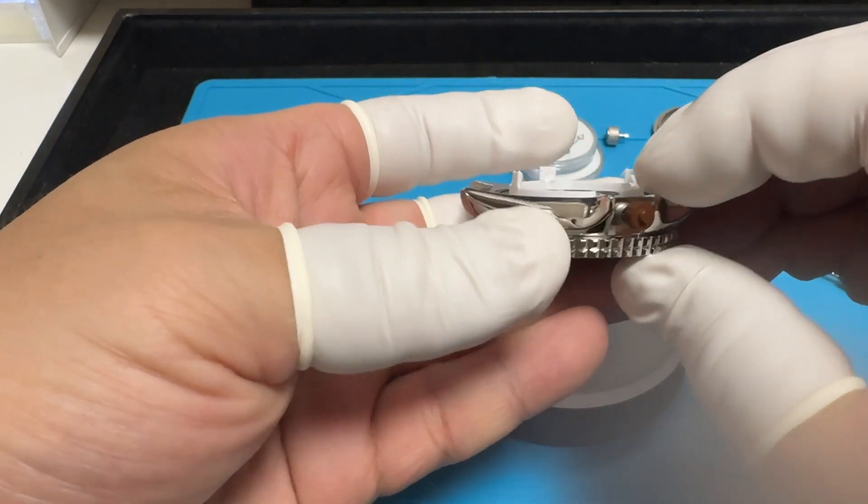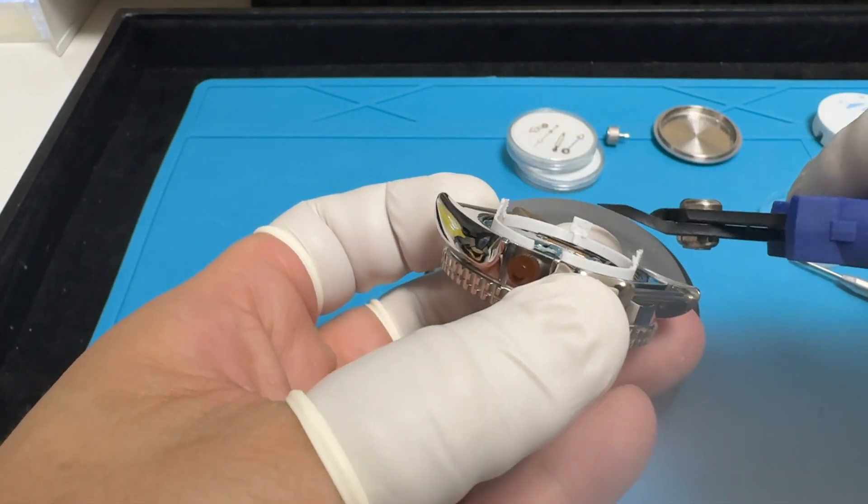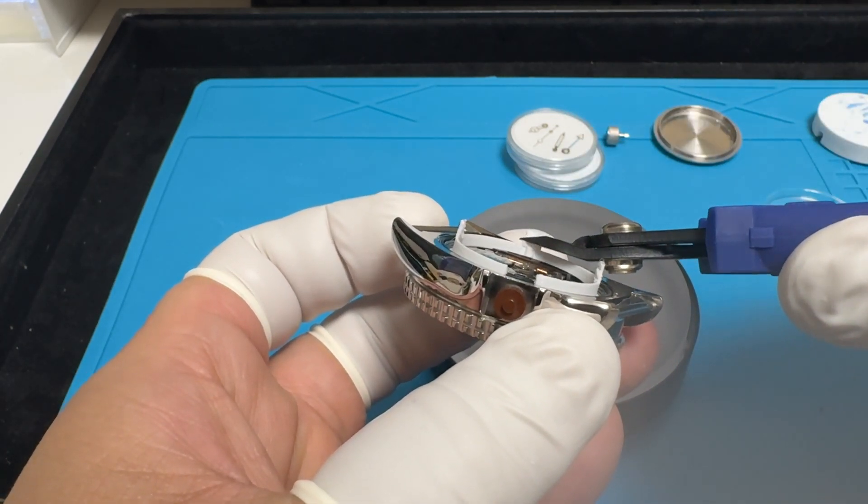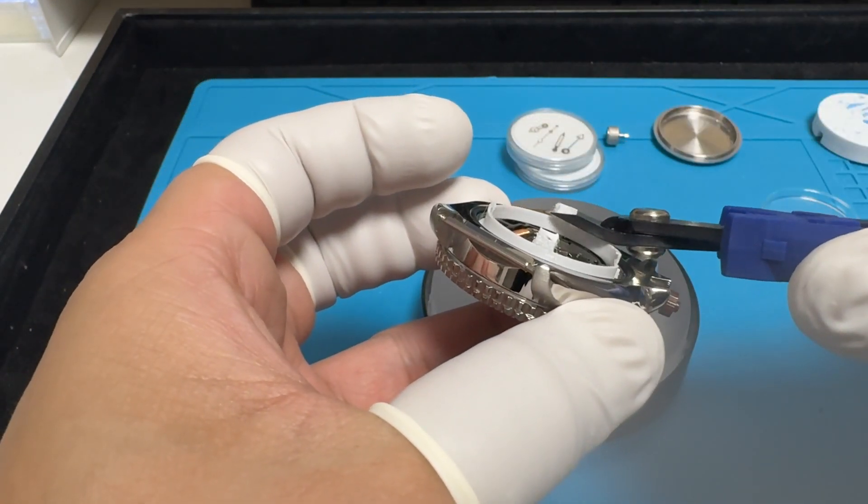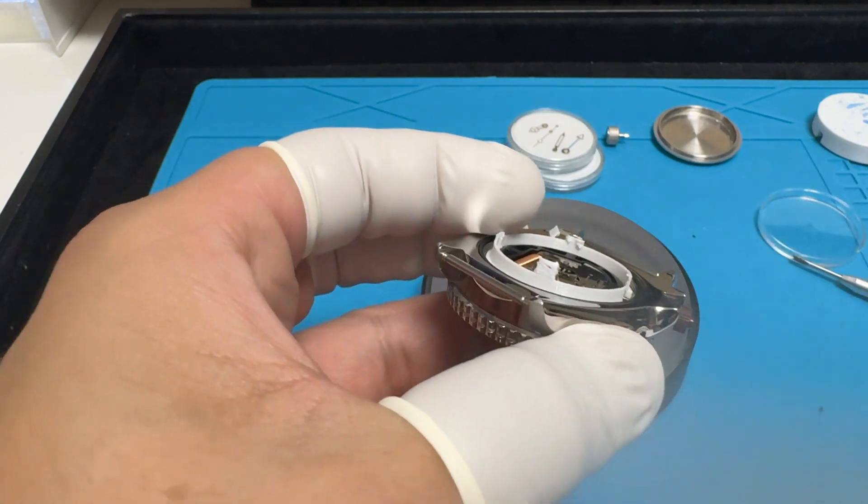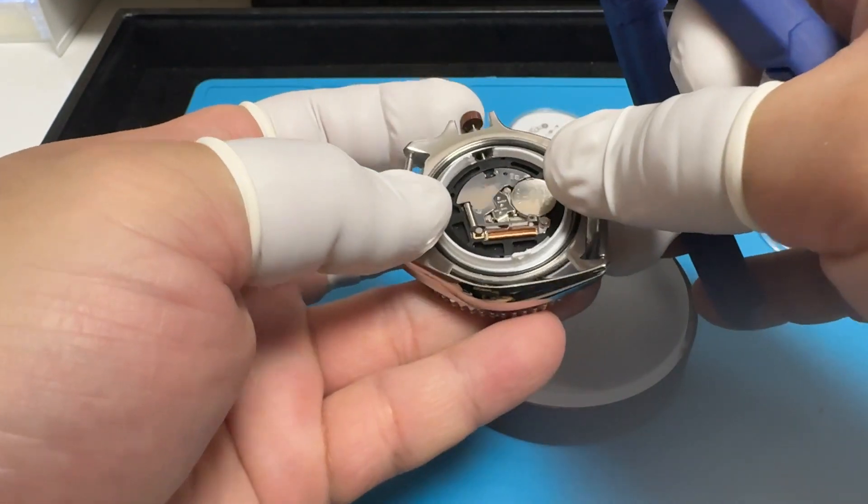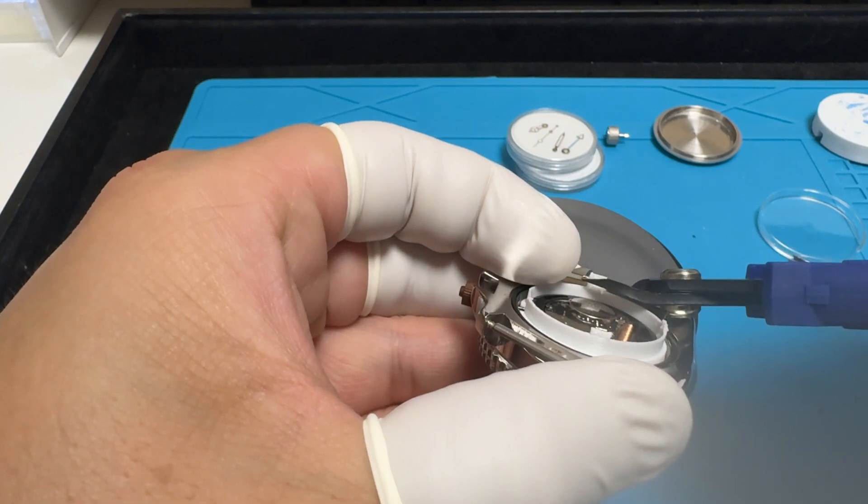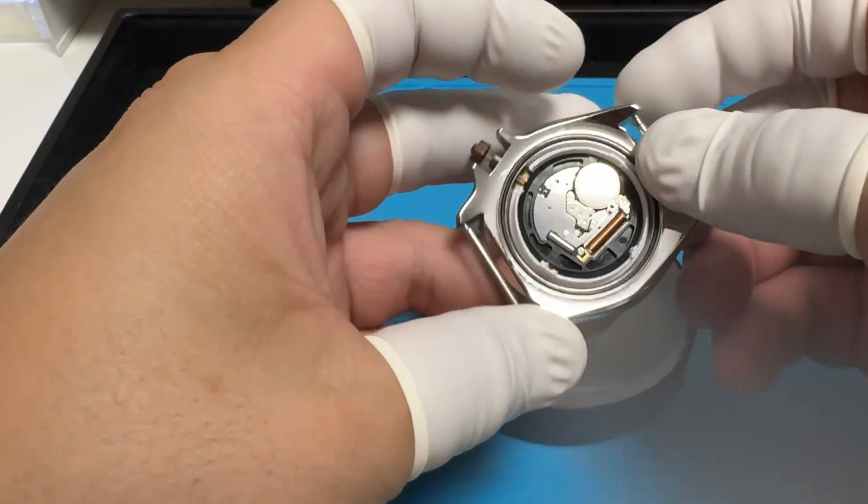Now for the movement holder, you can see that they're actually too long. I designed it this way because you could trim it if it's too long, so all you have to do is get a pair of pliers or cutters and just cut what you need. I would cut a little bit at a time. Depending on the thickness of your case, this movement holder should fit a variety of other cases and not just the SKX style cases.